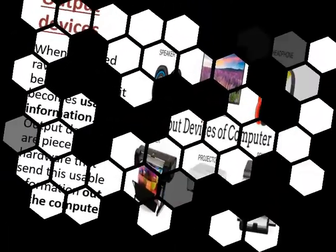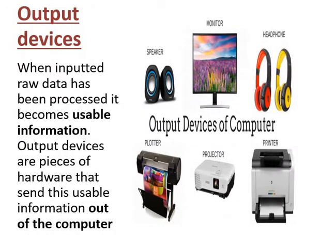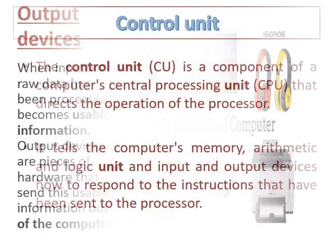The output unit: when input raw data has been processed, it becomes usable information. Output devices are pieces of hardware that send this information out of the computer — for example, on a monitor screen, speakers, projectors, printers, and many more.